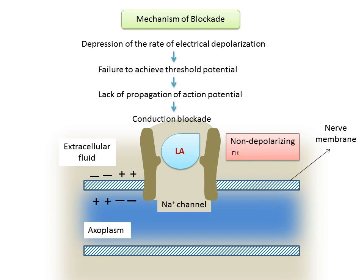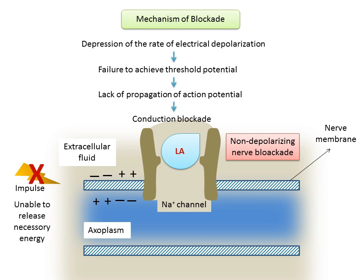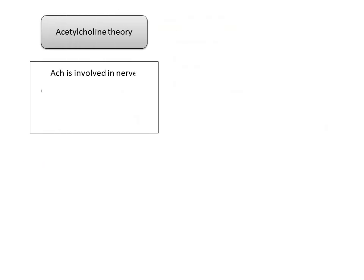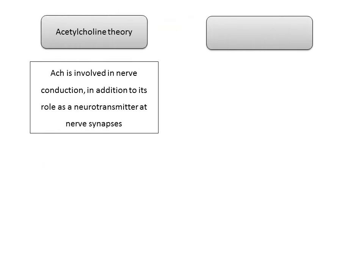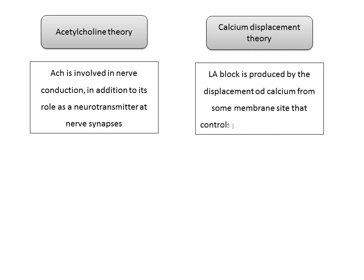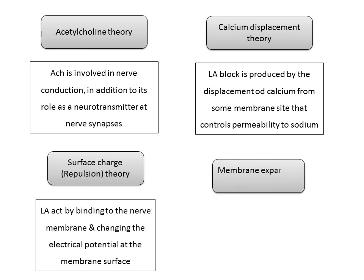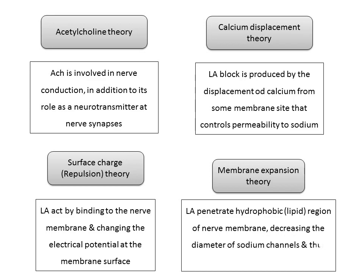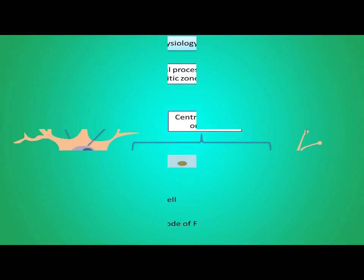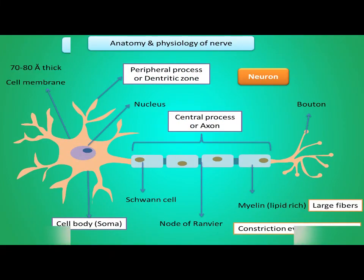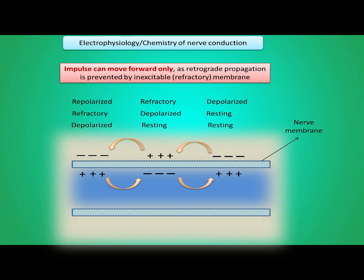This decrease in sodium conductance leads to depression of the rate of electrical depolarization, failure to achieve the threshold potential level, and lack of development of propagated action potentials — which is called conduction blockade. Nerve block produced by local anesthetics is called a non-depolarizing nerve block. An impulse that arrives at a blocked nerve segment is stopped because it is unable to release the energy necessary for its continued propagation. A few other relevant theories proposed in the past include the acetylcholine theory, calcium displacement theory, surface charge repulsion theory, and membrane expansion theory.